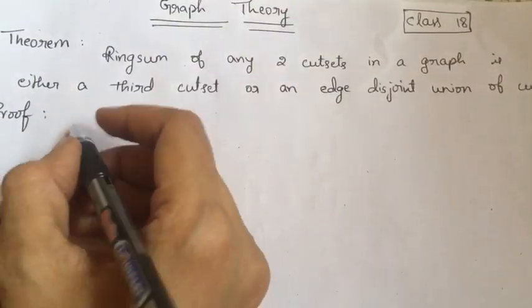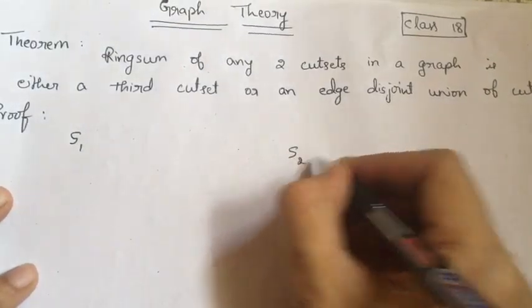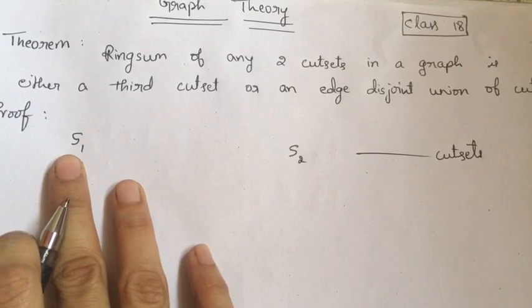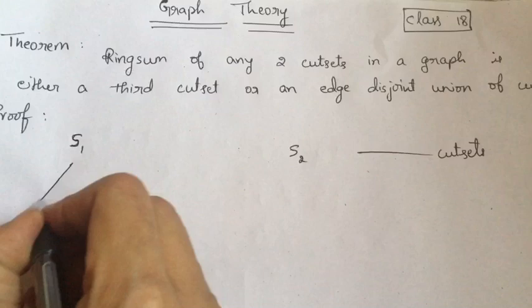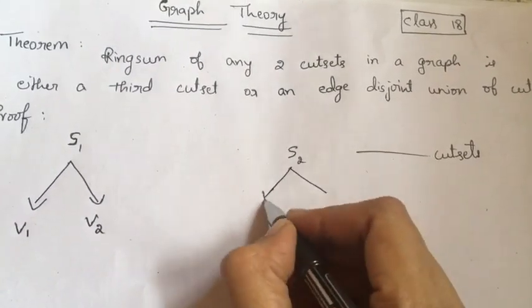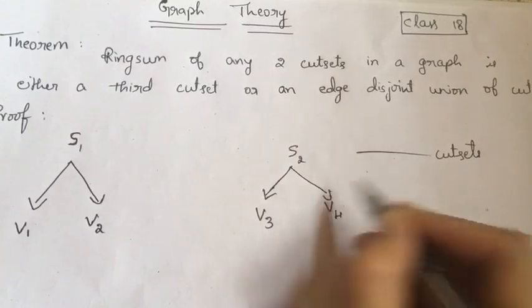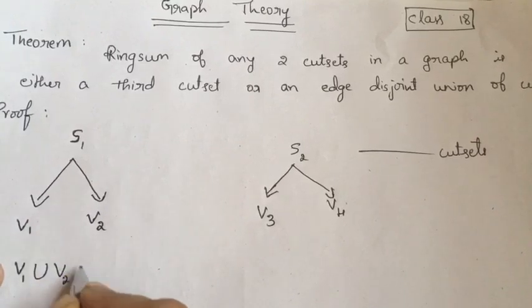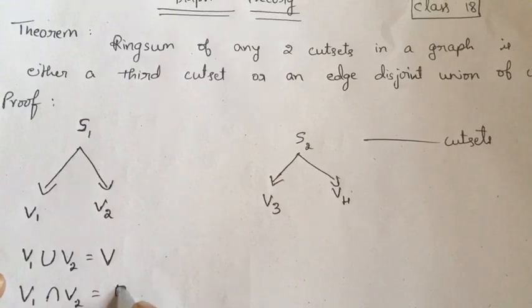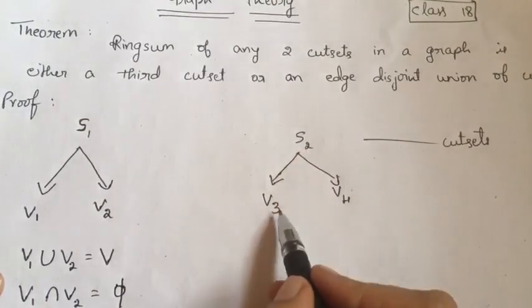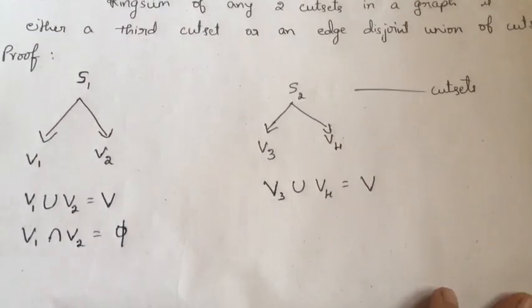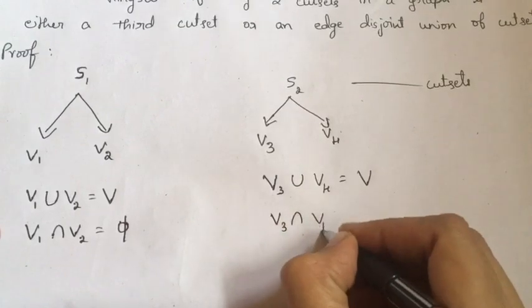Let G be a graph and S1 and S2 are two cut sets. We know that a cut set will partition the vertex set of a graph. So cut set S1 will partition the vertex set into V1 and V2, and cut set S2 will partition the vertex set into V3 and V4, such that V1 union V2 is the set of all vertices of graph G and their intersection is empty. Similarly, V3 union V4 is the vertex set V and their intersection is empty.